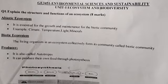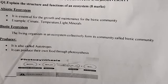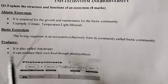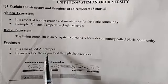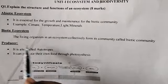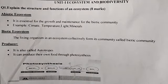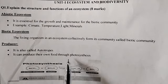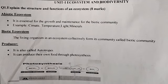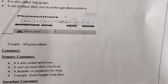Next, producers. They are called autotrophs because they synthesize their own food through photosynthesis. Example: all green plants.